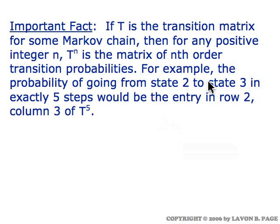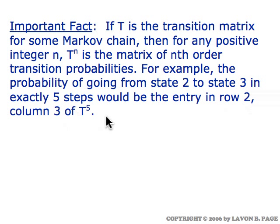For example, if you want to know the probability of going from state two to state three in exactly five steps, then that would be the entry in row two, column three, of the transition matrix raised to the fifth power. The beauty of this is that we can reduce all our calculations simply to calculating a certain power of the transition matrix, which is much easier than drawing huge tree diagrams, the other method we looked at.